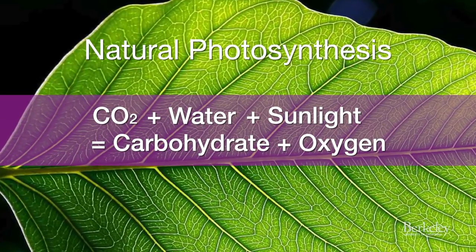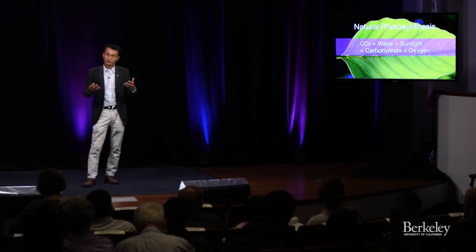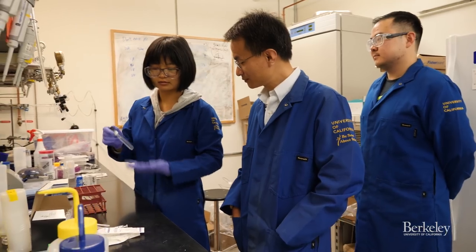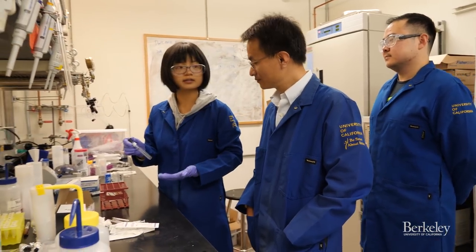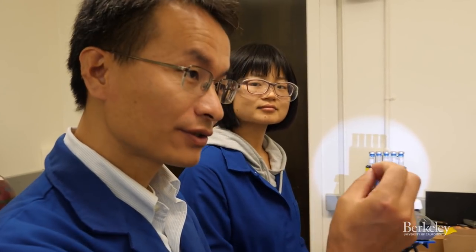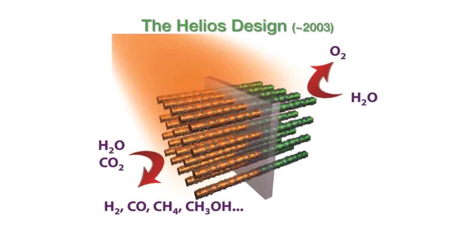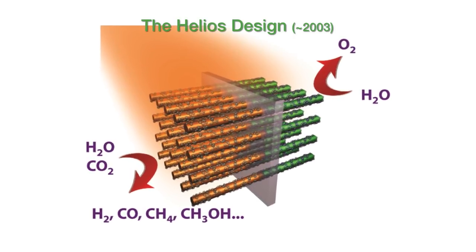Nature is telling us this is durable. As scientists, what we need to do is follow the chemistry and the physics and try to design an artificial photosynthetic system. Moving back more than ten years ago when we launched the Helios program at the Lawrence Berkeley National Lab, we put this particular artificial photosynthetic design on paper.